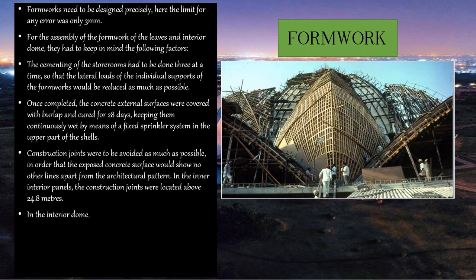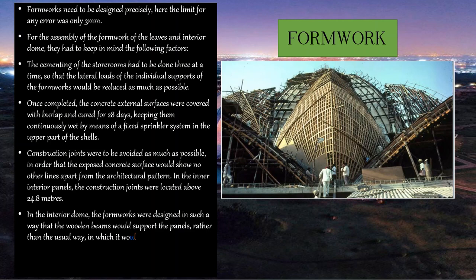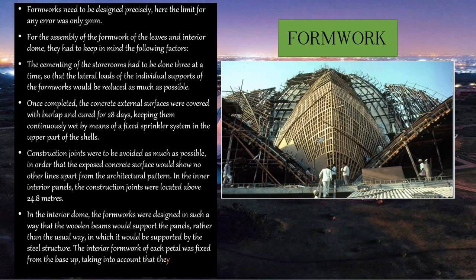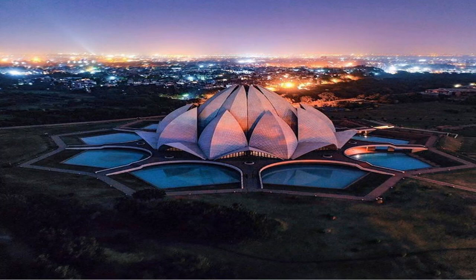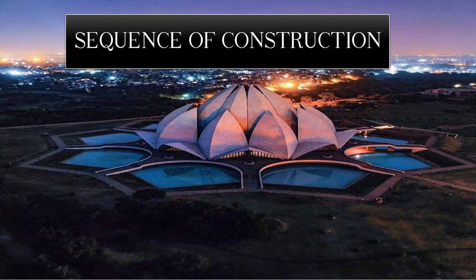In the interior panels, construction joints were located above 24.8 meters. In the interior dome, the formworks were designed so that wooden beams would support the panels rather than the usual method of steel structure support. The interior formwork of each petal was fixed from the base up, keeping in mind that they must stay perfectly aligned.